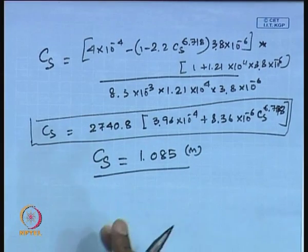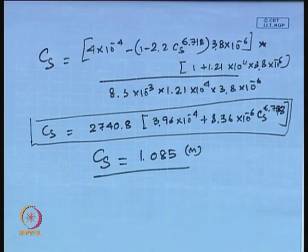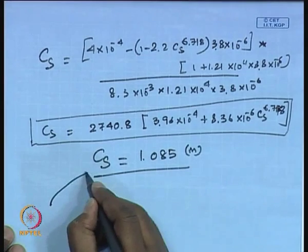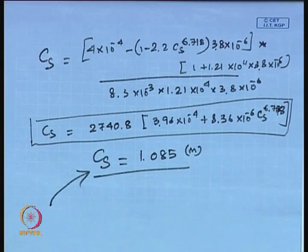So to reduce the dye concentration from 4×10⁻⁴ molar to 3.8×10⁻⁶ molar using TX-100 and chrysoidine dye, a surfactant feed concentration of about 1.085 molar is required. In the next class, we will take one more example of cloud point extractor design and then move on to the next surfactant-based separation process — micellar-enhanced separation. Thank you.